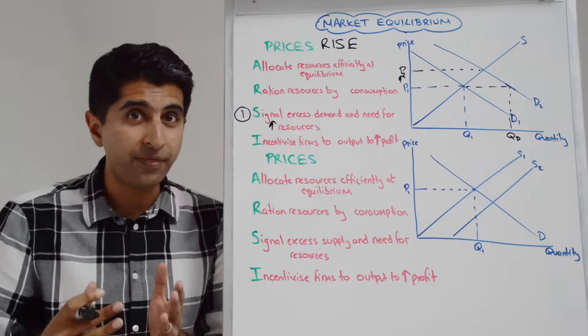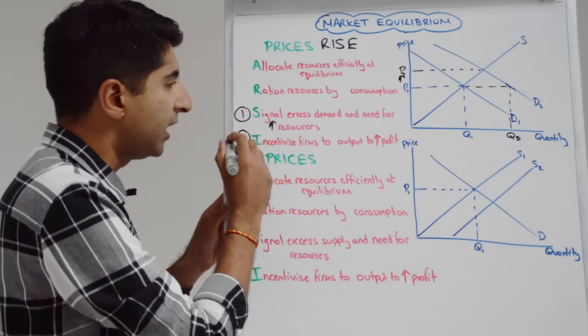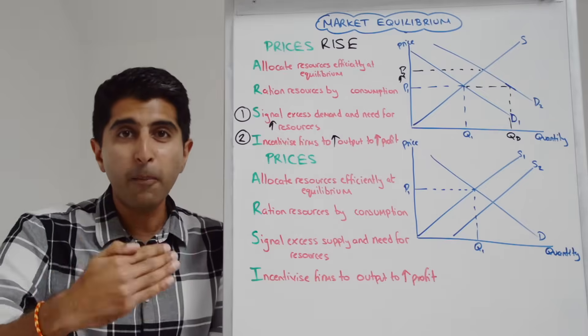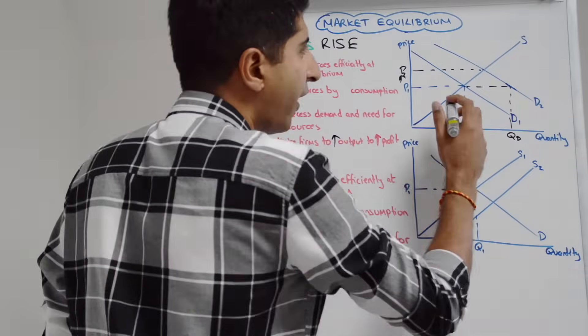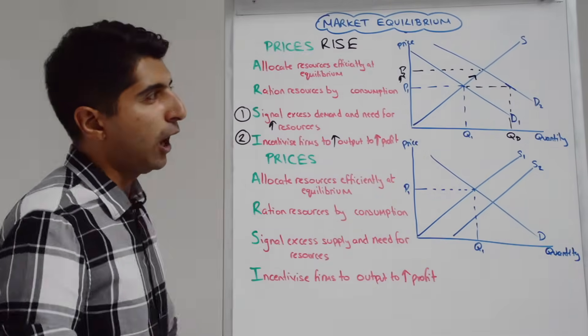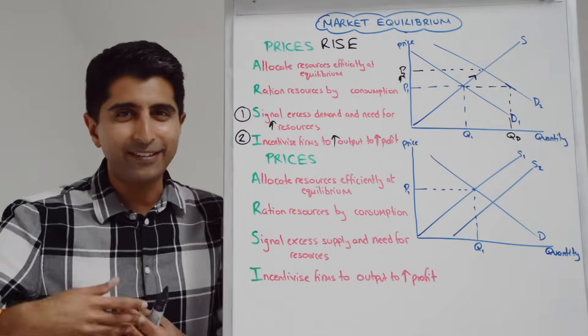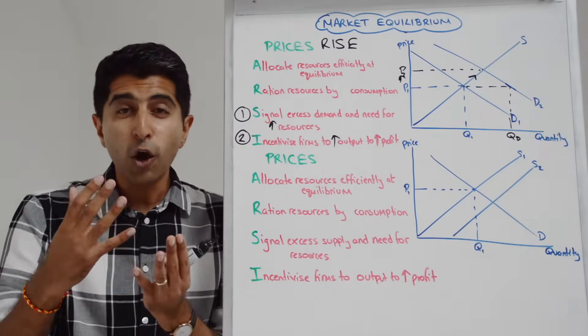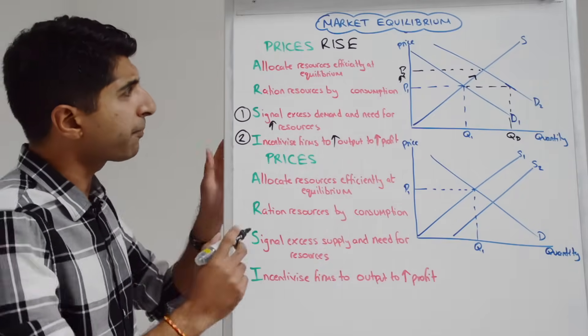Higher prices incentivize firms to increase their output, to make more profit, of course now produce more, you can sell more at a higher price, what a way to make more profit, we can show that function via an expansion along the supply curve or an extension along the supply curve, so this could be new firms entering the market, this could be existing firms increasing output by investing in new capacity or using up spare capacity, but there we go, that is the incentive function.